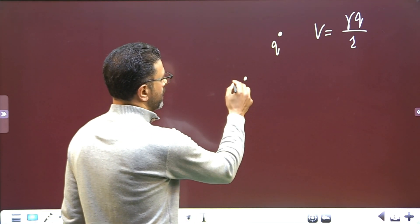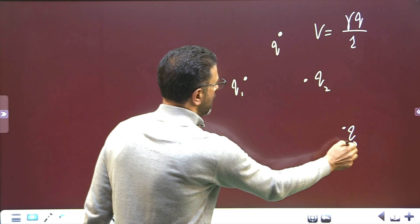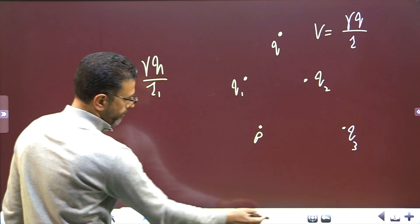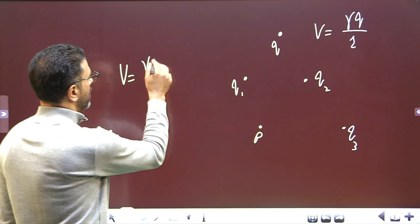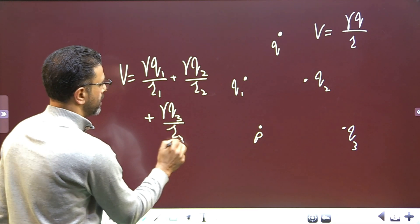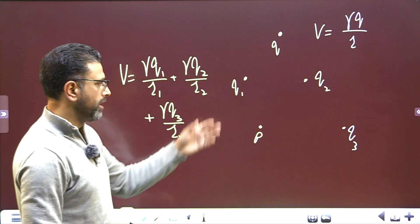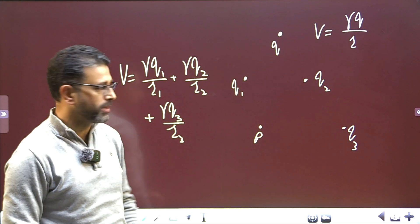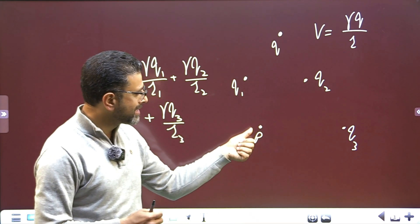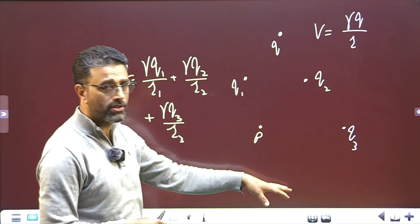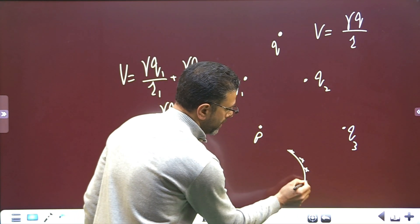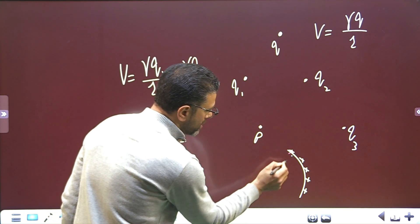So if we have a charge Q1 here, a charge Q2 here, and a charge Q3 here, and we have to find the potential at point P, the total potential is simply gamma Q1 divided by R1, plus gamma Q2 divided by R2, plus gamma Q3 divided by R3. This is simple algebraic addition — if some charge is negative we take the minus sign, if positive we take the positive sign. The special case we'll be dealing with in this question is when charges are at the same common distance from point P. In the case of a continuous charge distribution, consider all the charge elements on an arc.